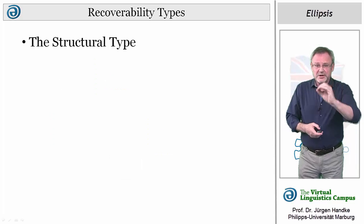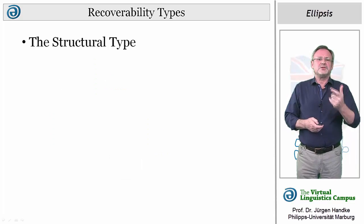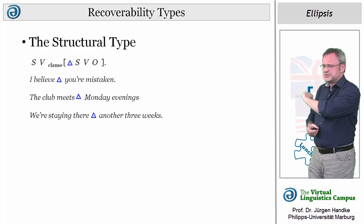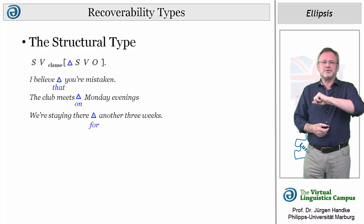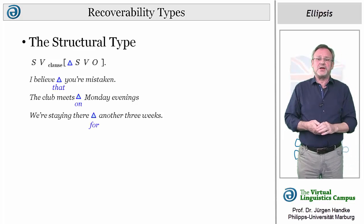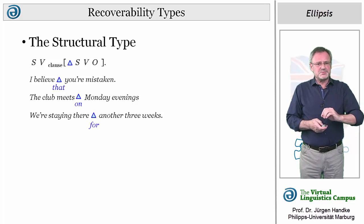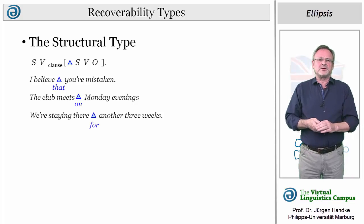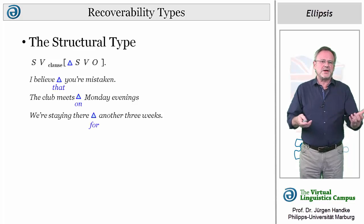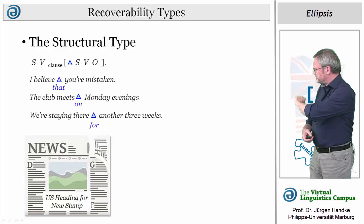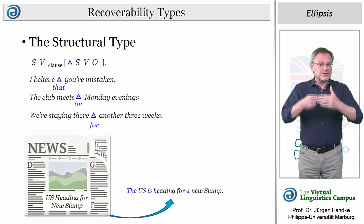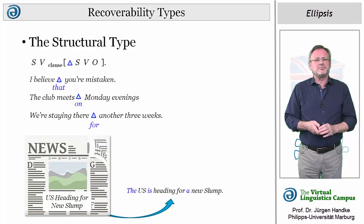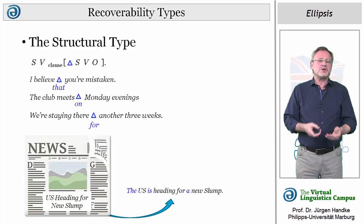In sentences with structural ellipsis, the third type, the interpretation depends on the knowledge of grammatical structure. Here are some examples where a conjunction or prepositions have been ellipsted and can be recovered without reference to any external context. Structural ellipsis often involves the omission of determiners, pronouns, operators, and other close-class words in block language — for example in book titles, notices, or headlines, as in the headline 'US heading for new slump,' which stands for 'The US is heading for a new slump.' Note that often there are no clear-cut boundaries between structural ellipsis and instances of situational ellipsis.